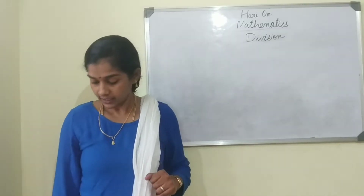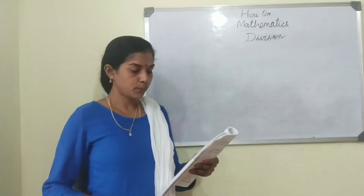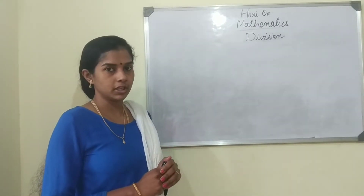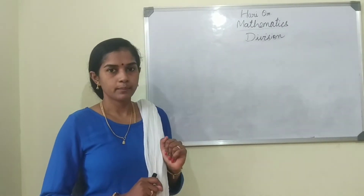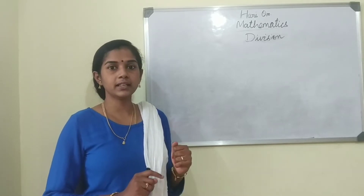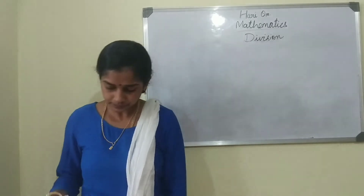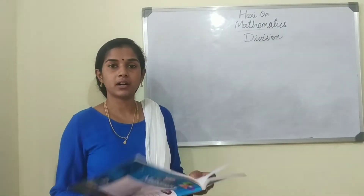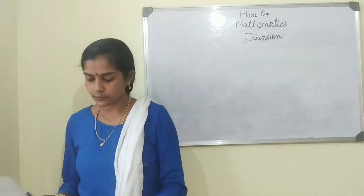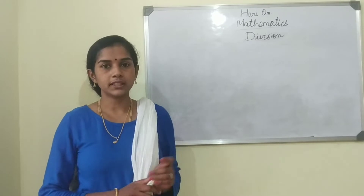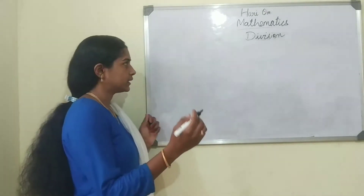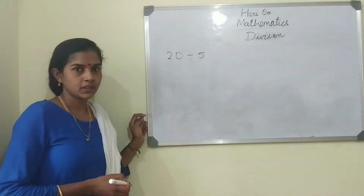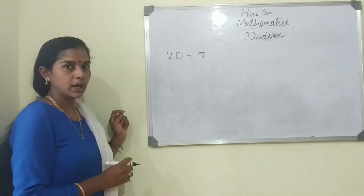Today in division, let us start the new point — that is division without remainder, that is the long method. All these days you learned division by repeated subtraction, division by sharing, division by grouping, and division by using a number line. So all these four things you have learned. Today you are going to learn division by long method. Let us take 20 divided by 5.